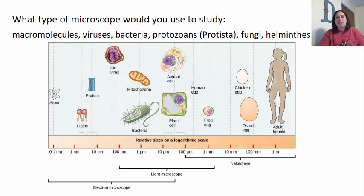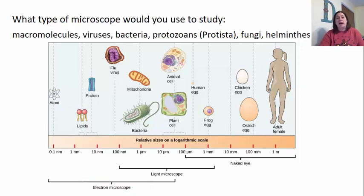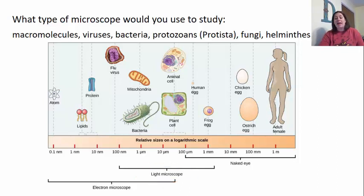What types of microscopes would we use to study different organisms? For macromolecules — things like fats, proteins, carbohydrates — you would have to use an electron microscope. Viruses are similar: most require an electron microscope due to their size. Bacteria and protozoa can actually be viewed using light microscopes. Fungi and worms from animalia can often be seen with the naked eye, though you may want to use a light microscope to look at more detailed structures. This brings us to staining.